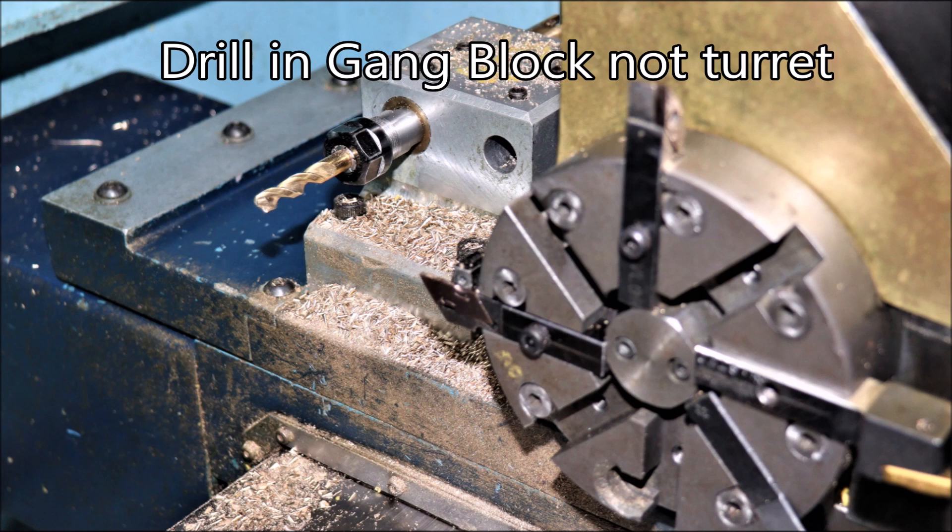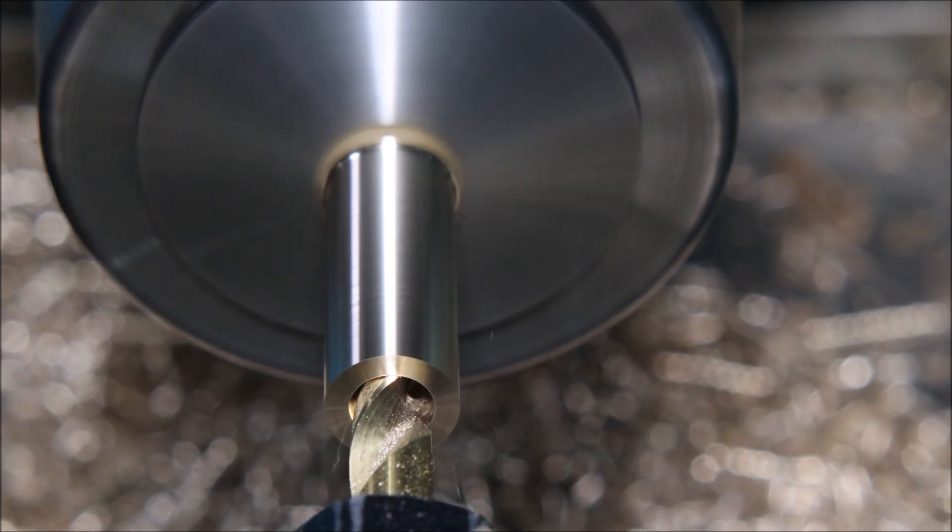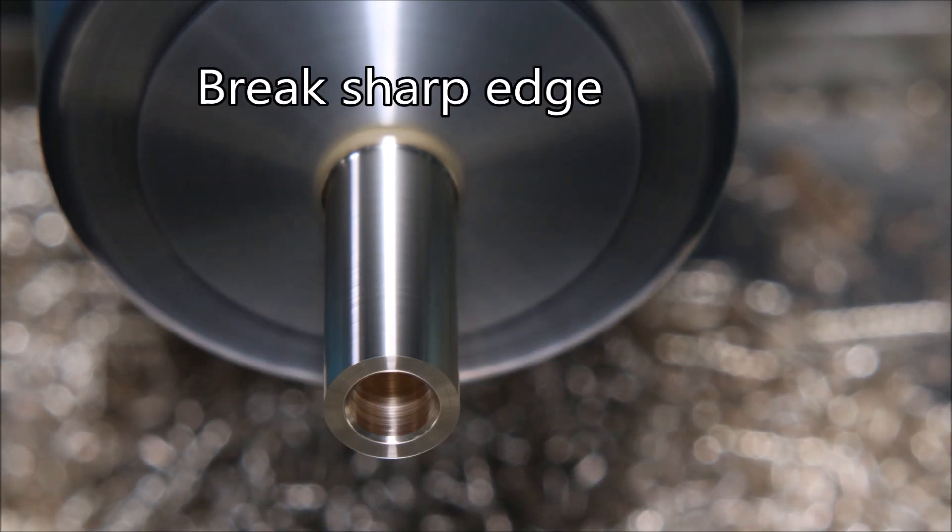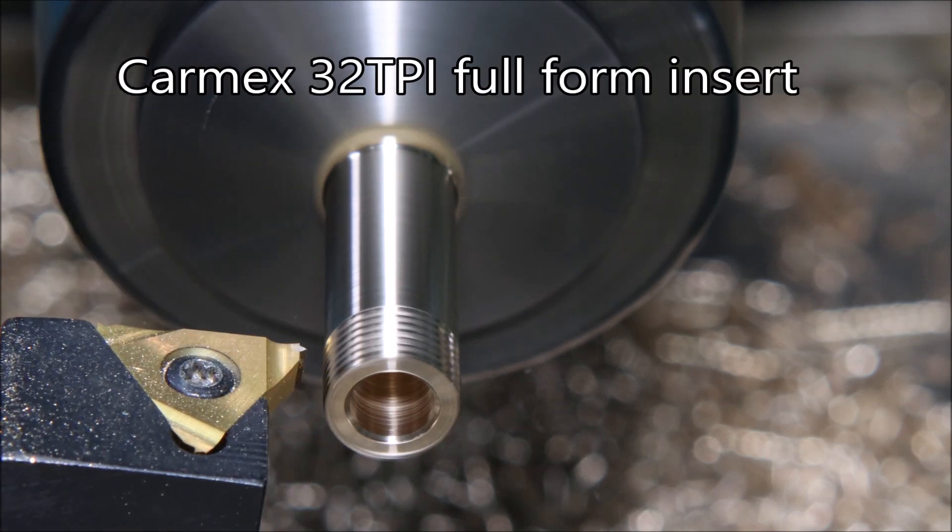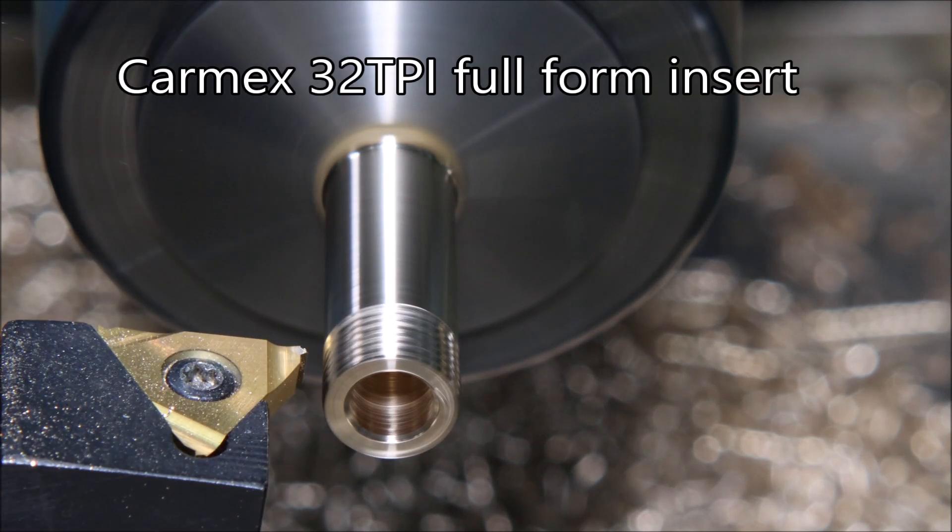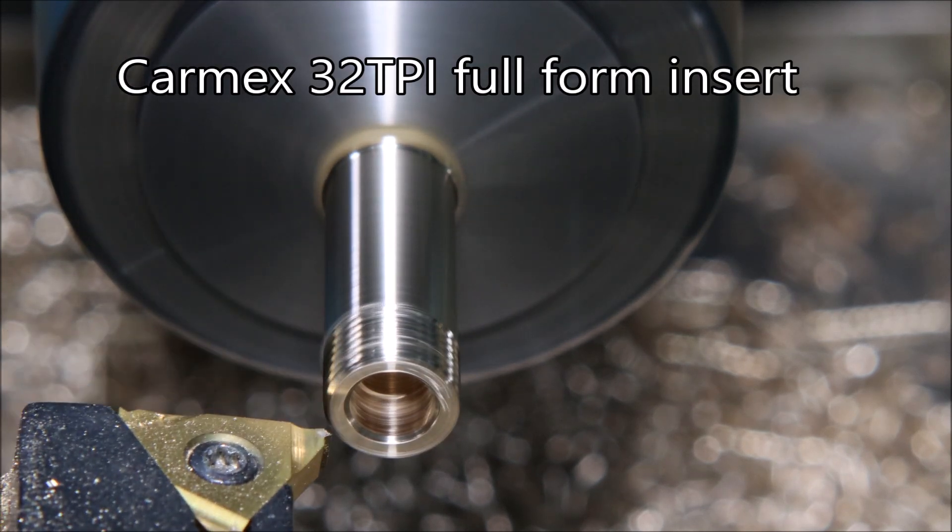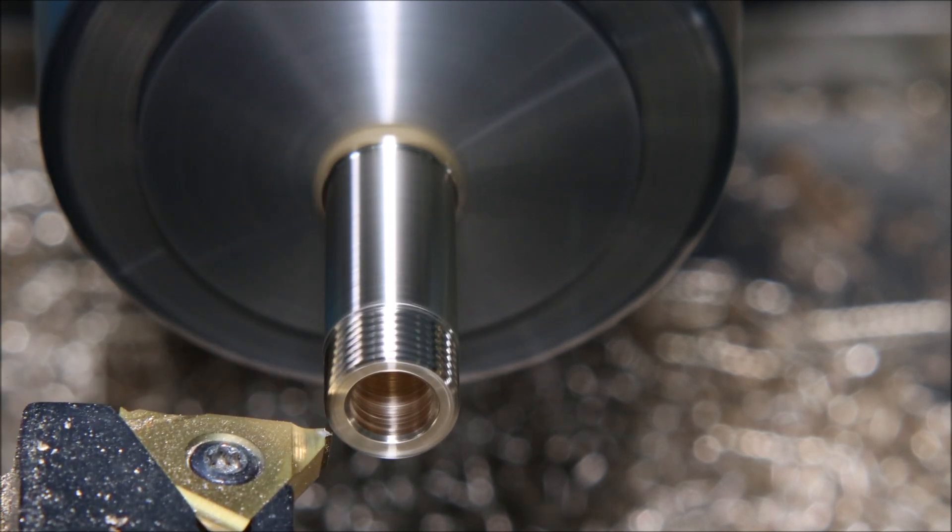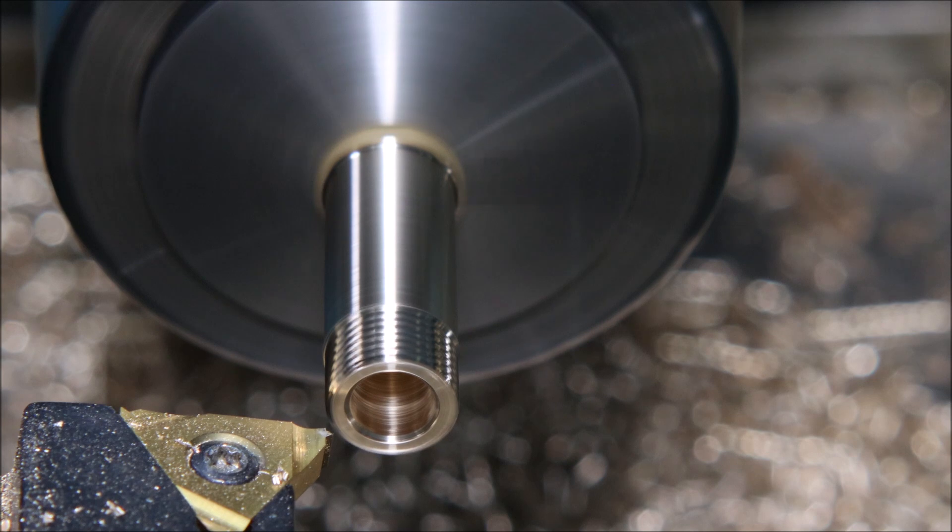There's a shot of the drill in a gang block - much prefer that to the turret for drills. This thread is so short that even when the OD is 0.375, it still feels very wobbly in a test thread.